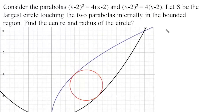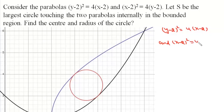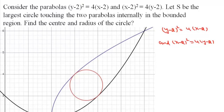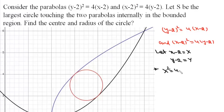The two given parabolas are (y−2)² = 4x−2 and (x−2)² = 4y−2. We'll shift the origin to the point of intersection which is (2, 2) so that the problem simplifies. We let X = x−2 and Y = y−2, then the equations of the two parabolas become X² = 4Y and Y² = 4X. We'll solve the problem for these two standard equations and then find the center and radius by shifting the origin back.